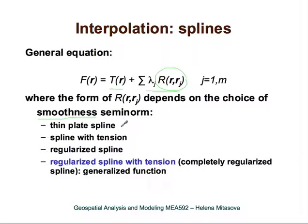There are many types of splines. For example, there is the thin plate spline where the smoothness seminorm includes only second-order partial derivatives. Then there is the spline with tension that includes first and second-order partial derivatives. And then there is the regularized spline with tension, which is a generalized function that can reproduce the behavior of most other spline functions.